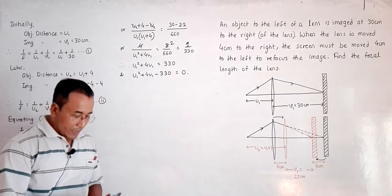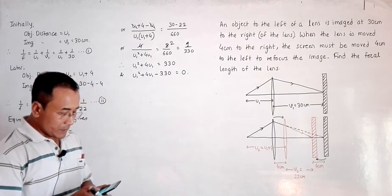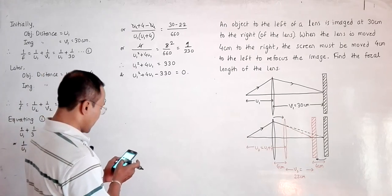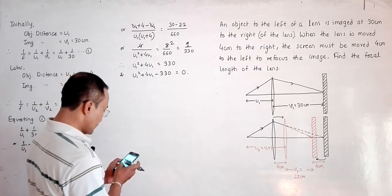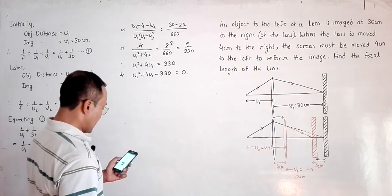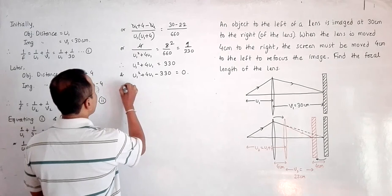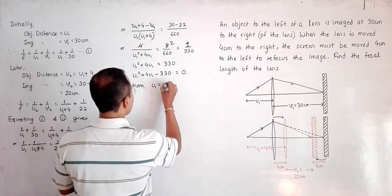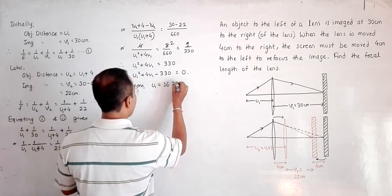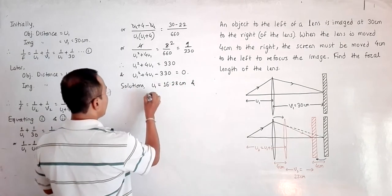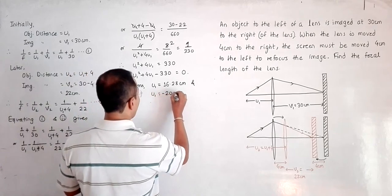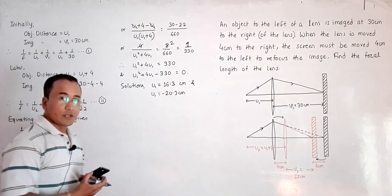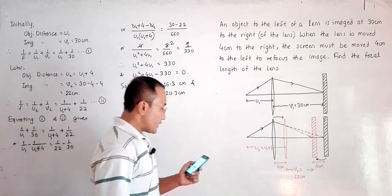This is a quadratic equation. Solving it using a calculator app gives two solutions: u1 = 16.28 centimeters and u1 = −20.3 centimeters. Taking care of least count of devices, we have got two values for u1.